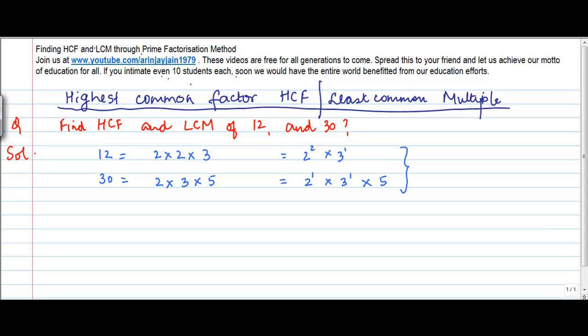Because you are doing this through the prime factorization method, you need to express the composite number as its prime factors with their powers. Once this is done, you need to find the highest common factor.